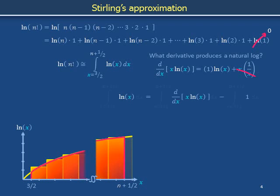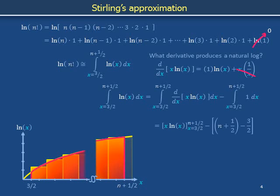It might appear that we have failed, since the derivative of x times natural log of x is natural log of x plus 1, not natural log of x. However, by subtracting 1 from both sides and isolating the natural log of x, we can solve for the integral of the natural log of x as desired. Integrating both sides from x equals 3/2 to n plus 1/2, the second fundamental theorem of calculus states that integration is the undo button for differentiation. The solution of the first integral is x times natural log of x evaluated from x equals n plus 1/2 down to x equals 3/2.